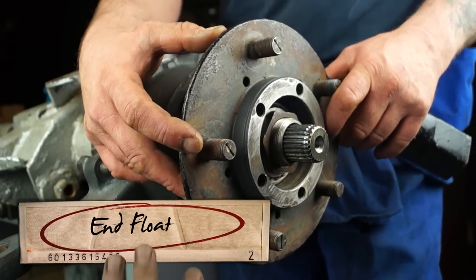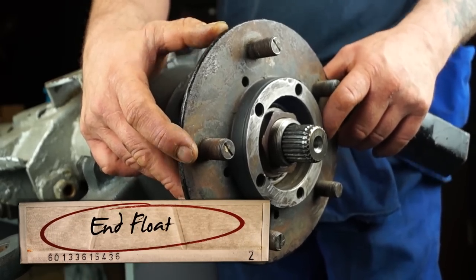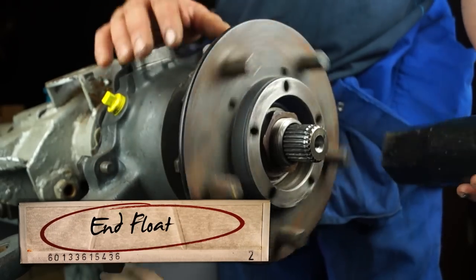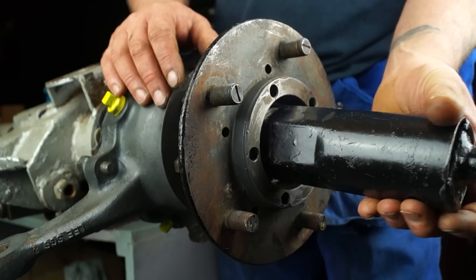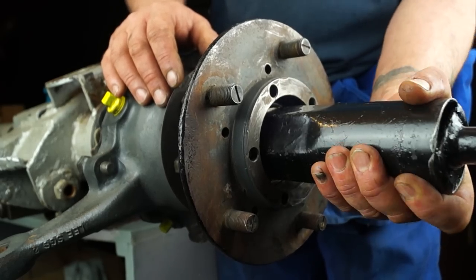As I explained in earlier tutorials, this is end float - it's not a preload and this is adjustable by tightening up a nut. This is your adjuster nut. The more you tighten it up, the less end float you have.